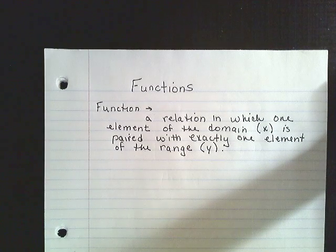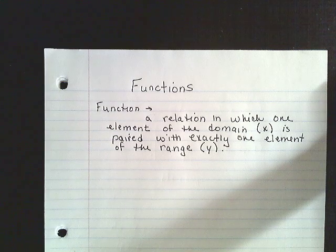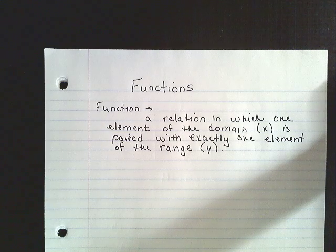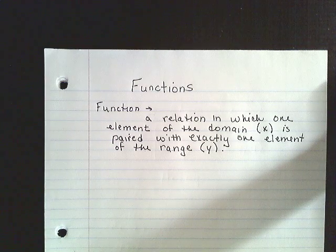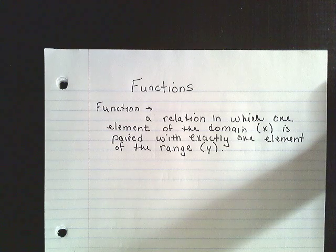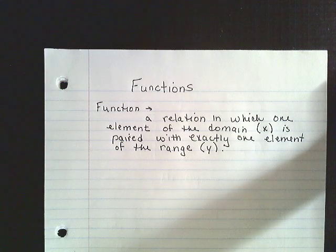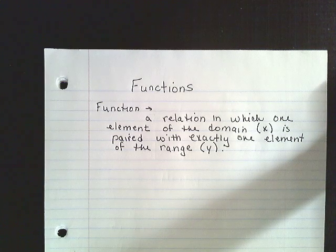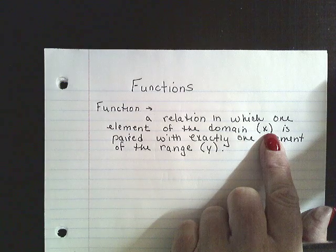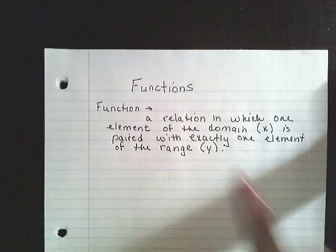This seems like a lot of information in one sentence, so what we really want to do is just identify functions. A function has one x value and one y value. So if you substitute 2 into an equation, you're only going to get one answer for y. For example, if I have y equals 2x plus 3 and I substitute 0 for x, my answer is y equals 3, giving the point (0, 3). No matter how many times I input 0, I always get 3. Exactly one x-coordinate gives exactly one y-coordinate.